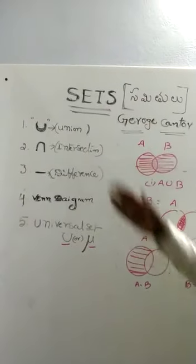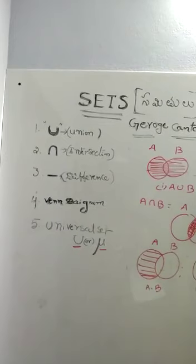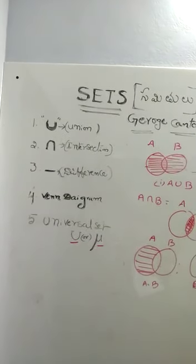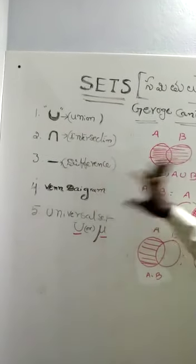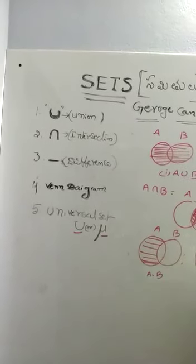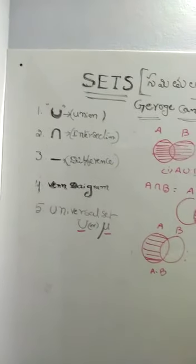The symbols already explained how to do it, how to draw the Venn diagrams, how to use the union, intersection, difference, and universal set. I will give some more example problems.